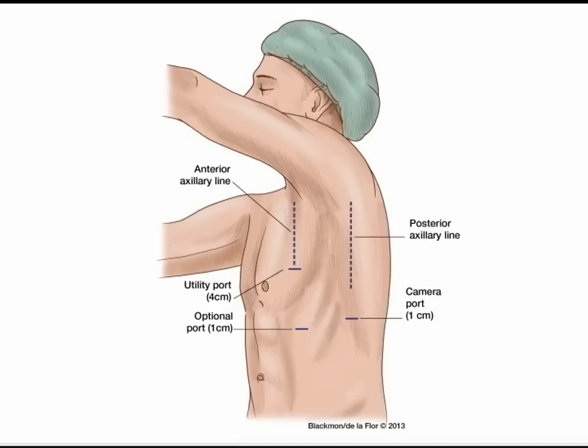The anterior axillary line marks the location of that port. A posterior axillary line one centimeter port in the seventh intercostal space is used as the camera port, and an additional optional port can be placed in the anterior axillary line inferior to the utility port.